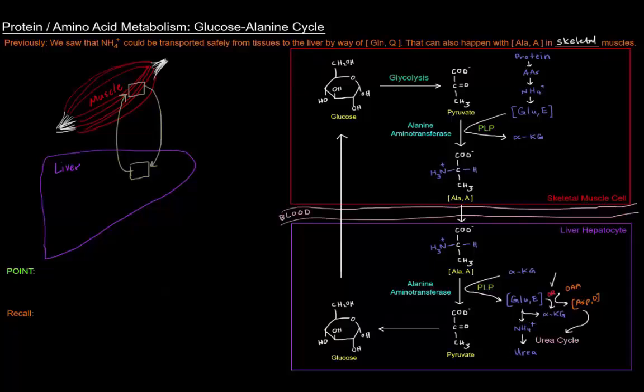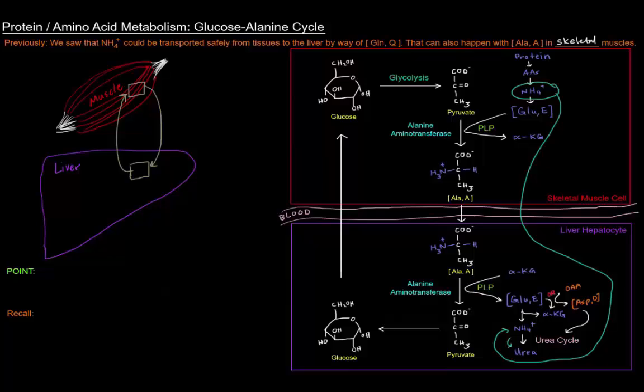Or that nitrogen can be used to supply transamination reactions to produce aspartate, which can also go through to the urea cycle. The point is though, that we're basically getting the nitrogen that are the products of breaking down proteins in the muscles out into the liver. We're taking these guys out through the blood and to the liver so that they can eventually be excreted safely in urea.